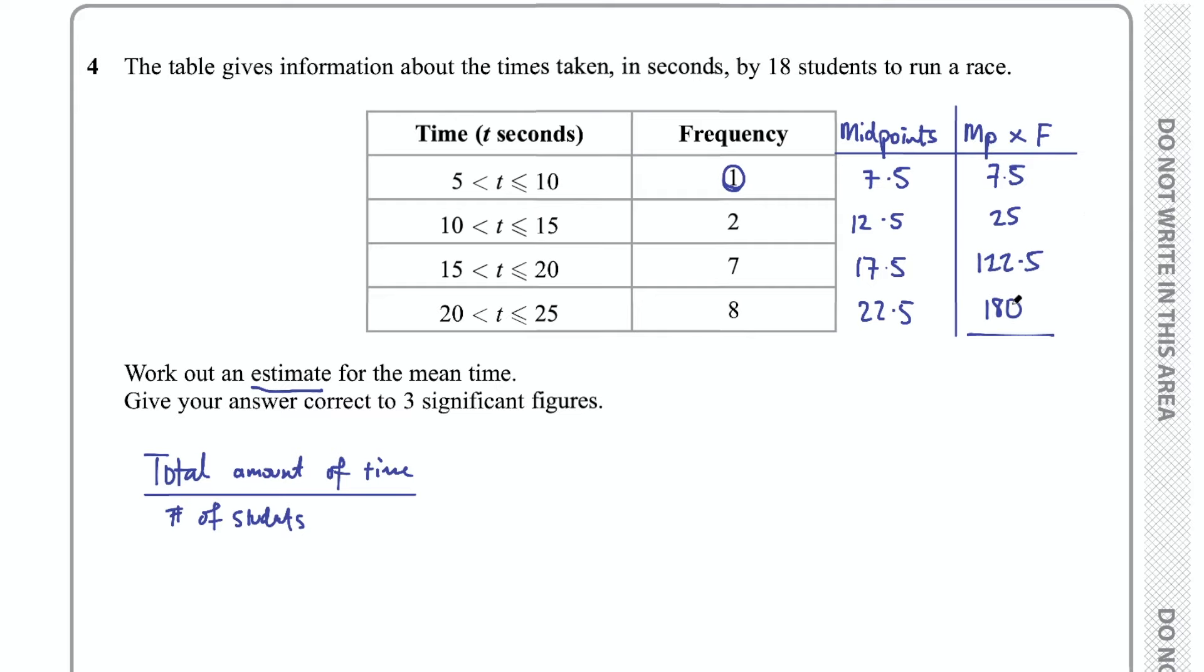Then we go ahead and add all of those numbers up to get a total there. If you add them all up, again use your calculator, you get 335. So now let's go ahead and do our calculation to find the mean. We've got the estimated total amount of time of 335. The number of students is 18, and sometimes they might not give you this number in the question and you'll have to total up this column as well. That's just a small detail. If you go ahead and do that operation on a calculator - this is a calculator type question - then you get 18.6111 recurring, or 18.61 recurring.